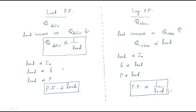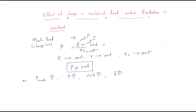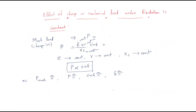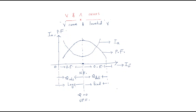So whenever there is a change in mechanical load with constant excitation: if operating at leading power factor, the power factor is proportional to load; when at lagging power factor, the power factor is inversely proportional to load. This concludes the discussion on change in mechanical load under constant excitation and about V and inverted V curves. I hope all of you understood the session. Thank you.